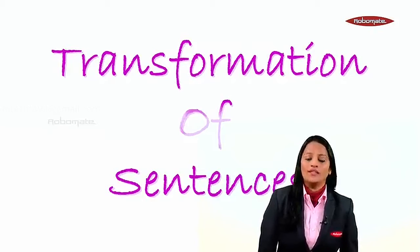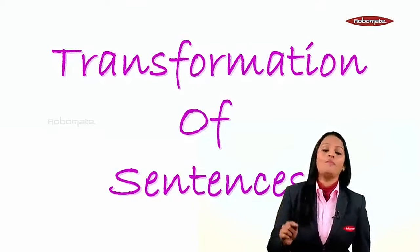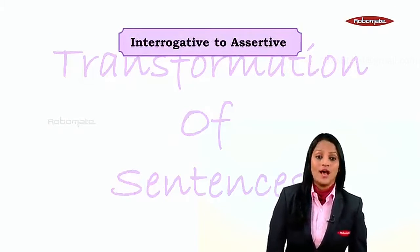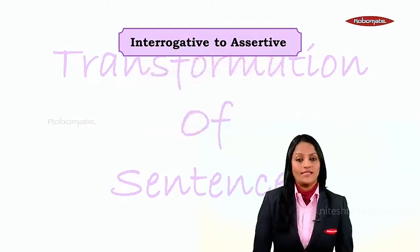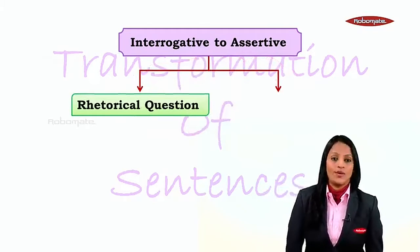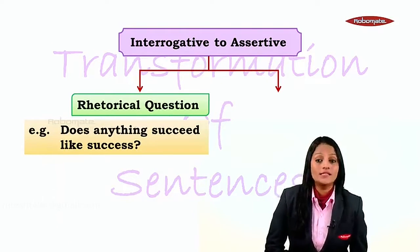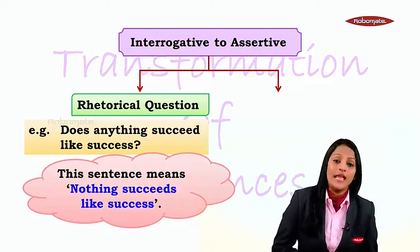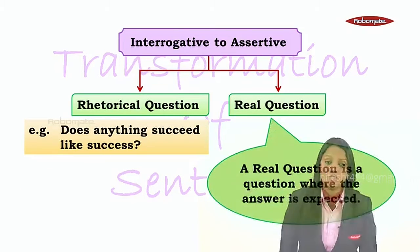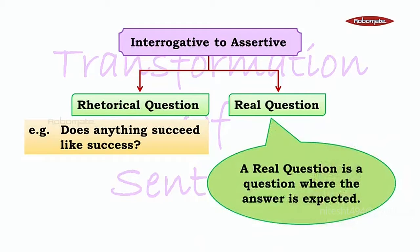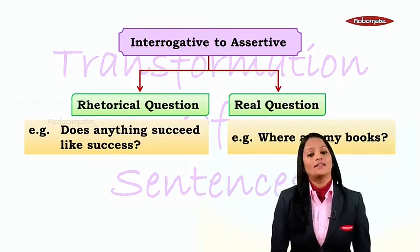Let's go ahead with transformation of sentences. We have already seen how to change from assertive to interrogative. Now we shall see how to change from interrogative to assertive. There are two types of interrogative sentences. One is the rhetorical question, where the answer is not expected — example: 'Does anything succeed like success?' — and the person is actually trying to say 'Nothing succeeds like success.' The next type is the real question, where the answer is expected — example: 'Where are my books?'